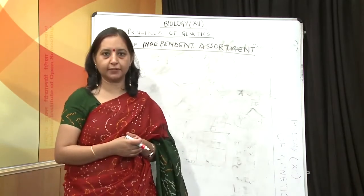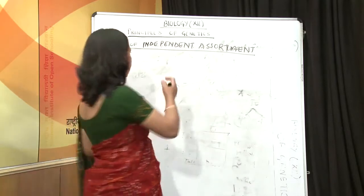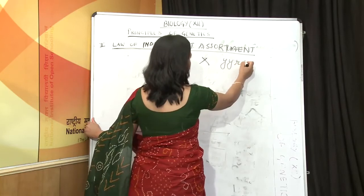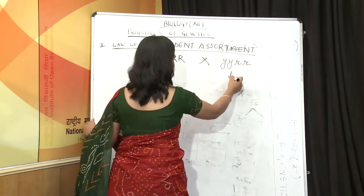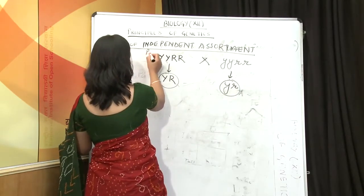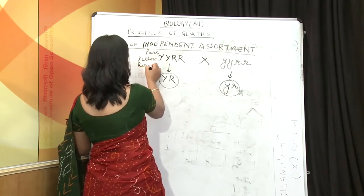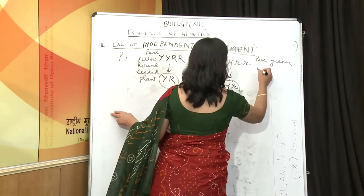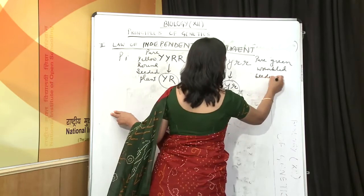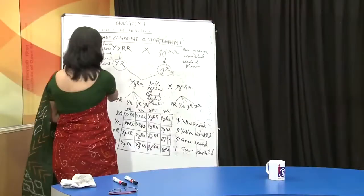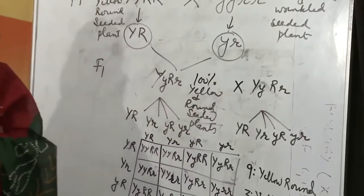Now we come to the third law — the law of independent assortment. In this law we examine the dihybrid cross, where two characters are taken into account simultaneously. If we take yellow and round seeds as parents and cross them with a green and wrinkled seeded plant, the gametes are formed. In the first generation, we get 100% yellow and round seeded plants, as per the law of dominance.